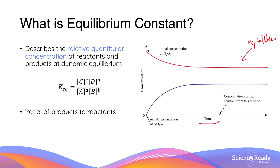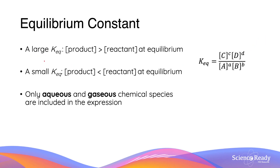By calculating the equilibrium constant — dividing the concentration of the products by the reactants — we are finding a ratio of products to reactants. The equilibrium constant tells us how much product and how much reactant we have when the reaction reaches equilibrium. As a general rule, a large equilibrium constant suggests the concentration of products is greater than reactants, while a small equilibrium constant suggests the opposite.